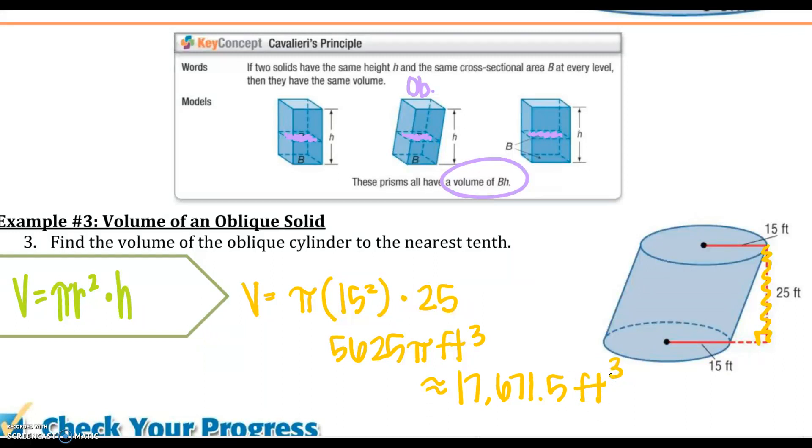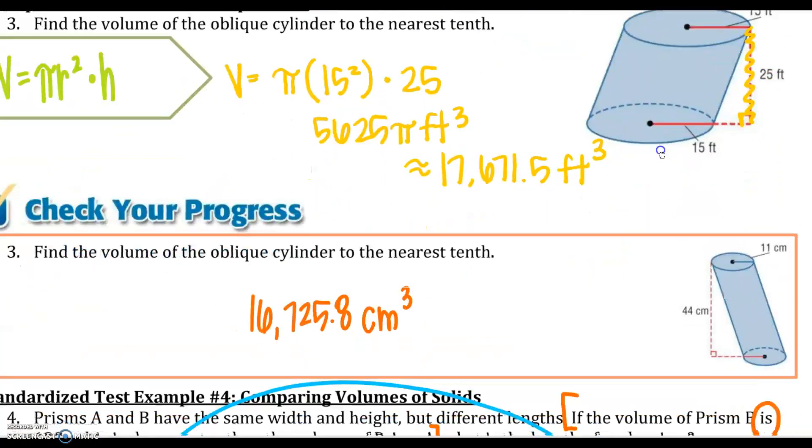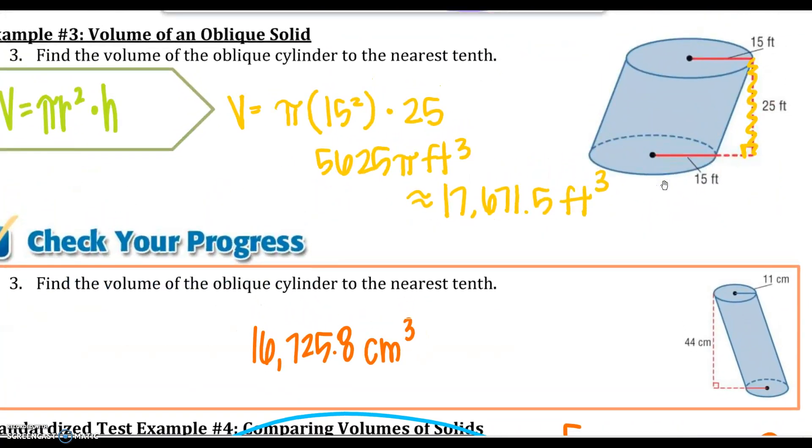Go ahead and stop this video and try your next check your progress. Here is your answer. If you leave it in terms of pi, it is 5,324 pi centimeters cubed.